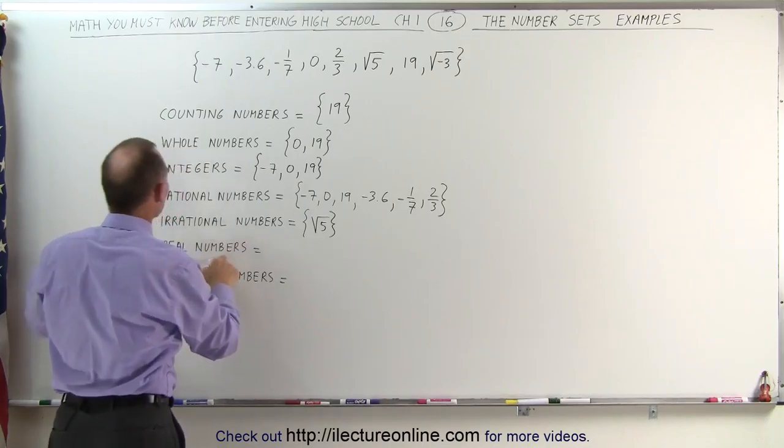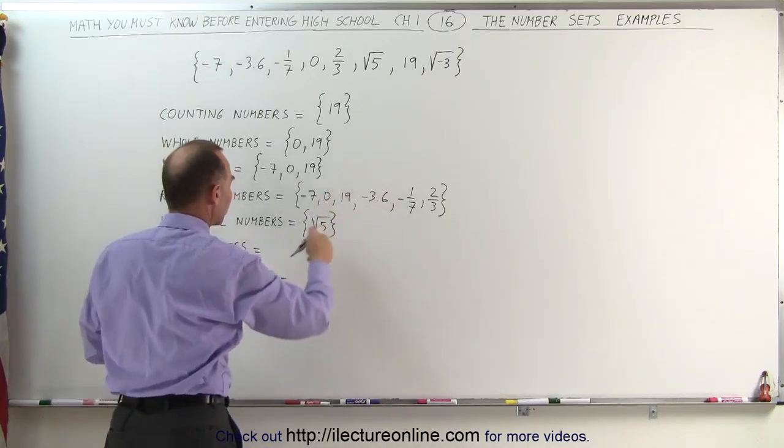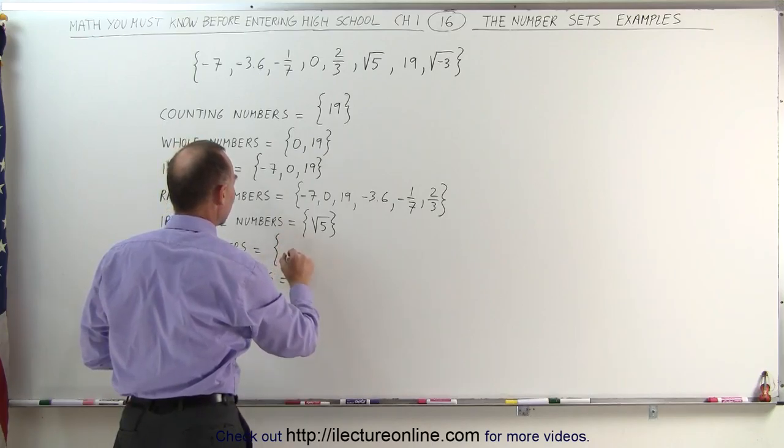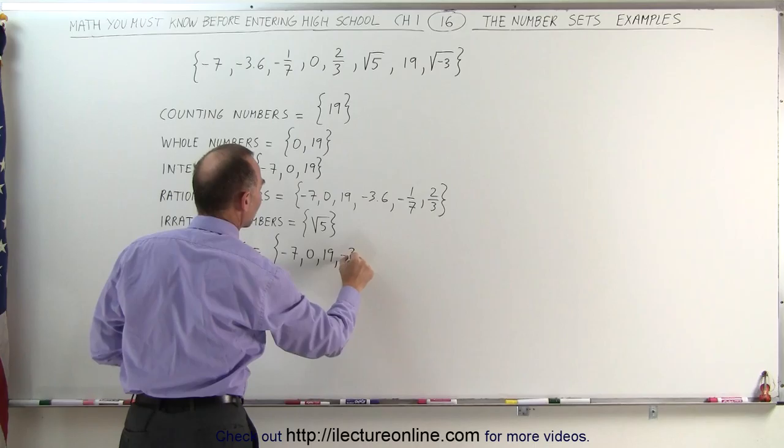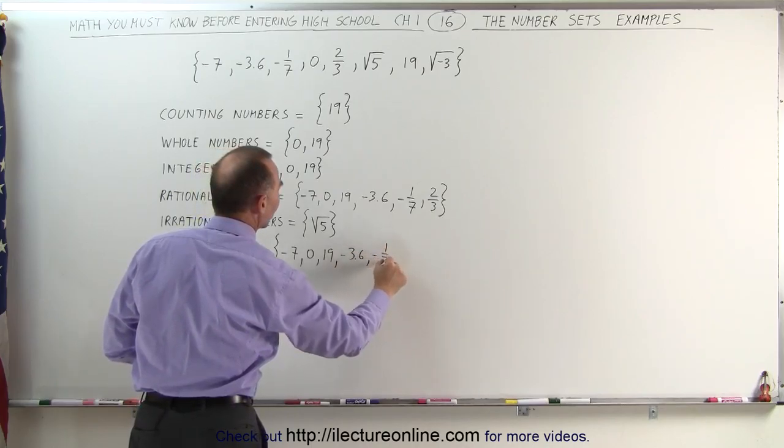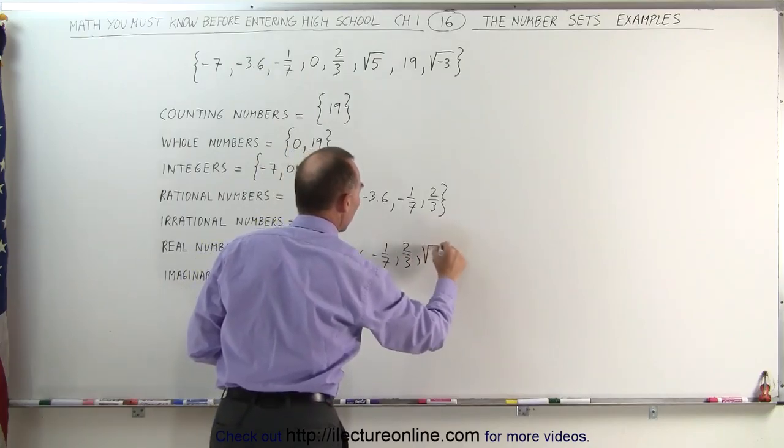The real numbers are all the rational numbers and all the irrational numbers combined. So we simply have to sum up these two, and we get the following: minus 7, 0, 19, minus 3.6, minus 1 over 7, 2 thirds, and also the square root of 5.